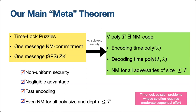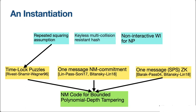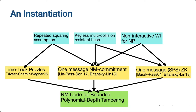For the specific instantiation: we instantiate the time-lock puzzles using the repeated squaring assumption — the most well-known construction — and use two other assumptions, a keyless multi-collision-resistant hash and NIWI, to instantiate the other two primitives. All in all, our non-malleable code is constructed from three assumptions: repeated squaring, keyless multi-collision-resistant hash, and NIWI for NP.